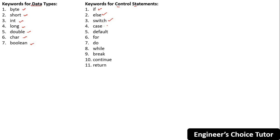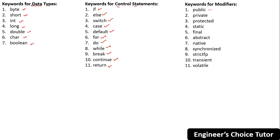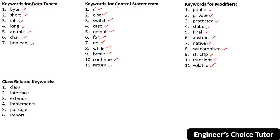We have a few keywords related to control statements: if, else, switch, case, default, for, do, while, break, continue, and return — that is 11 keywords. We also have keywords for modifiers like public, private, protected, static, final, abstract, native, synchronized, strictfp, transient, and volatile.